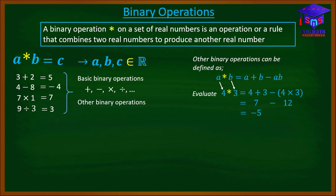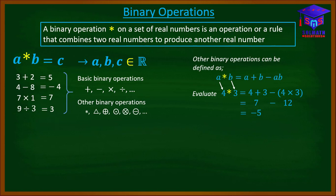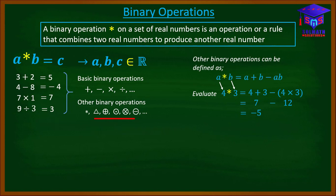Other binary operations that can be used include star, the triangle, O-plus, O-dot, O-times, O-minus, and many other advanced binary operations. So instead of the star, you may find any one of these symbols.